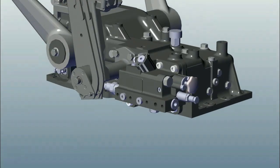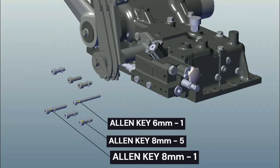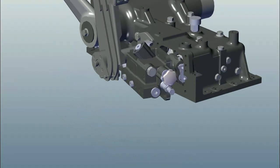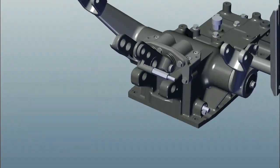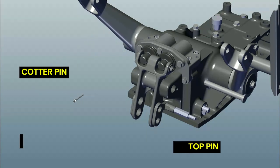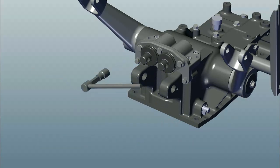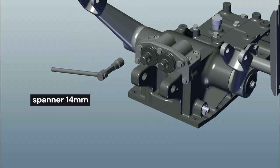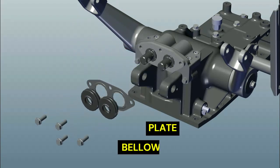Remove 7 numbers Allen bolts: 6 numbers M10 and 1 number M8. Remove control valve assembly. Remove cotter pin, top pin, bell crank. Remove 4 numbers M10 bolts. Remove bellow and plate.